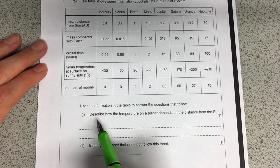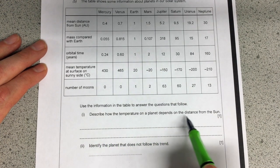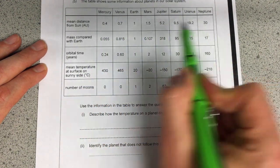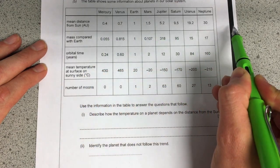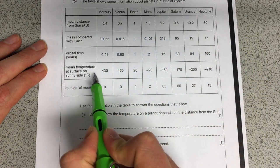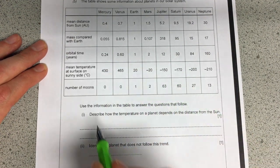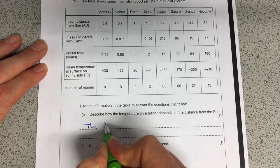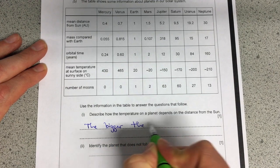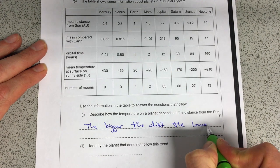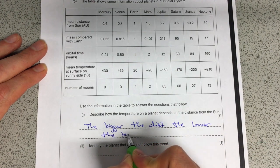So they want us first of all to describe how the temperature on a planet depends on the distance from the sun. Along the top here we've got the distances from the sun and as you can see they're getting bigger as they go that way. And then here we've got the temperature on those planets and you can see they're getting colder as they go that way. So I would say the bigger the distance, the lower the temperature.